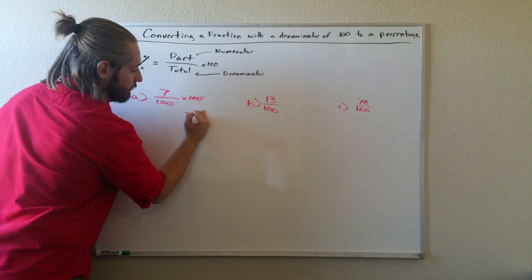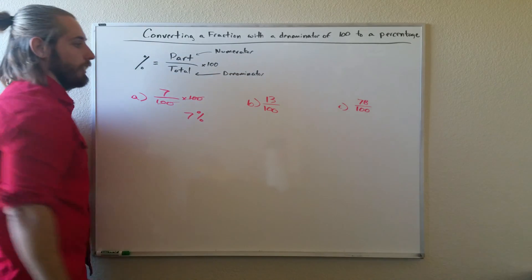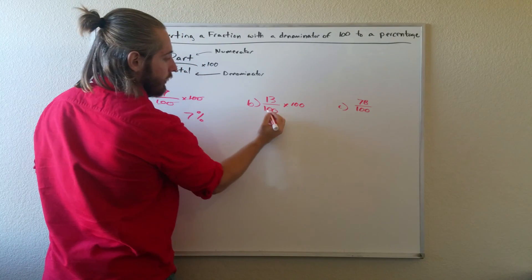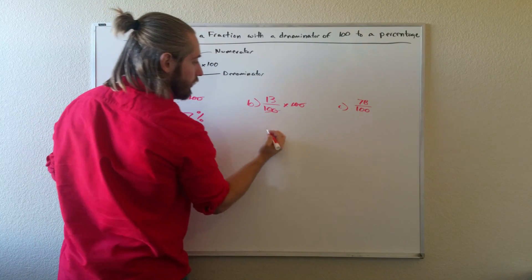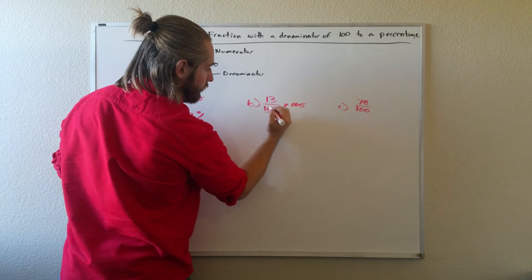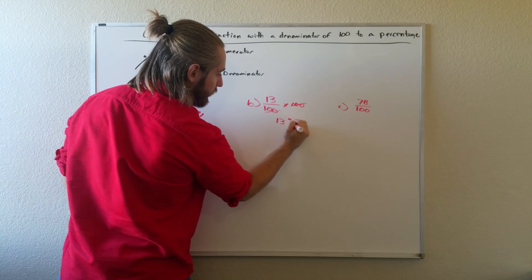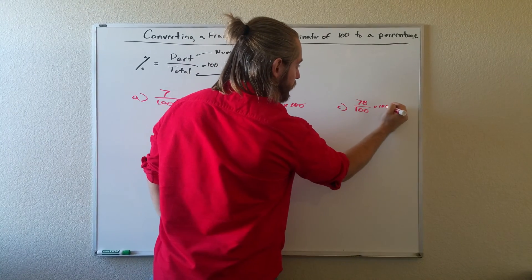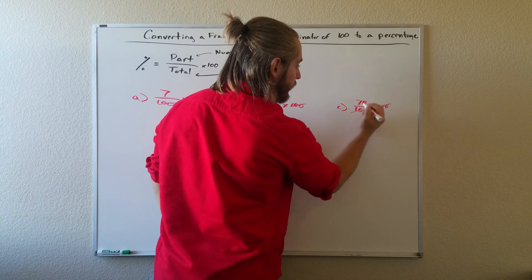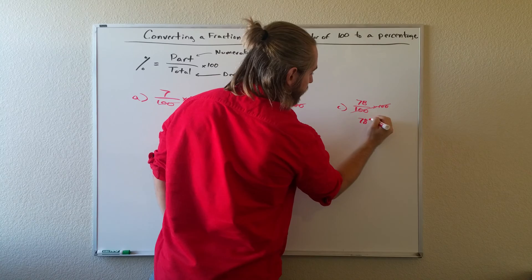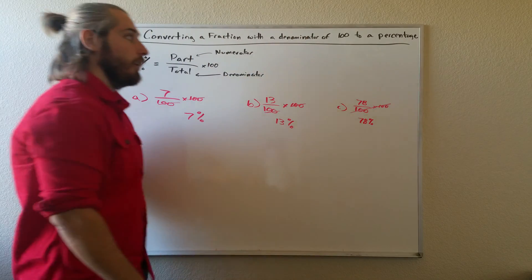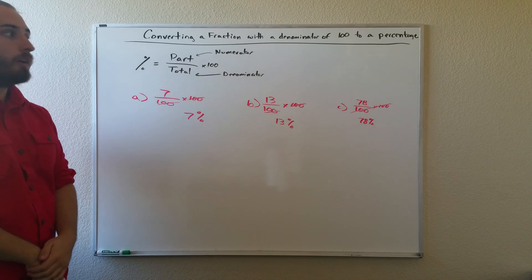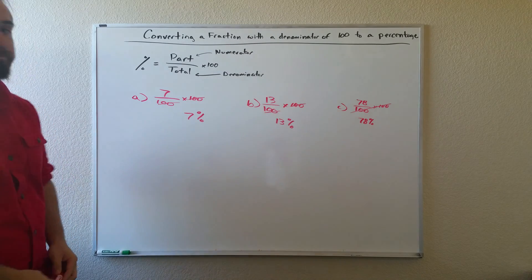So our percentage in this first case is 7%. We can do the same thing with this one: 100 over 100 will be 1, so we get 13%. Finally, our last one, we can just multiply it by 100 again; these two cancel out, we get 78%. And that's how you convert a fraction with a denominator of 100 to a percentage.